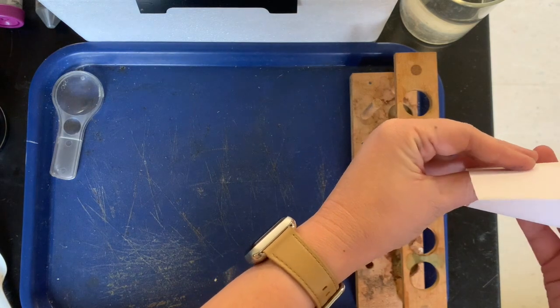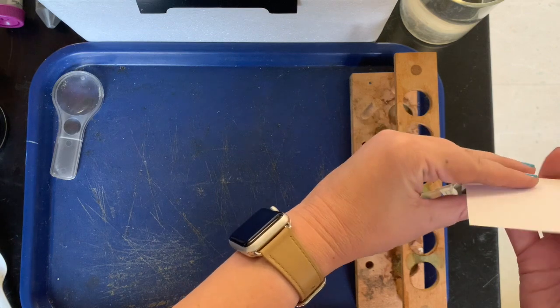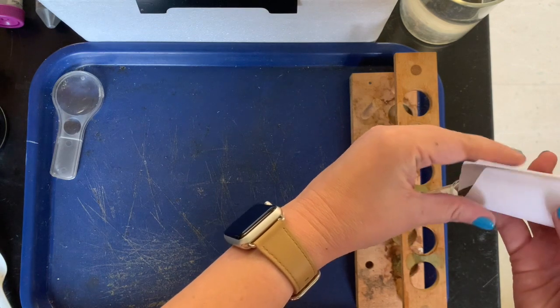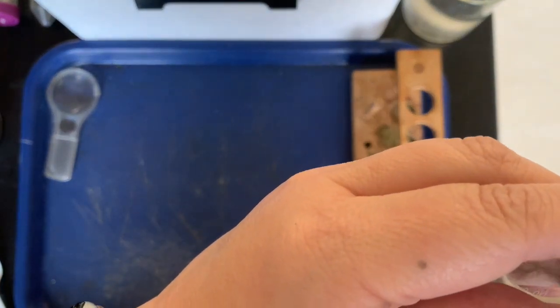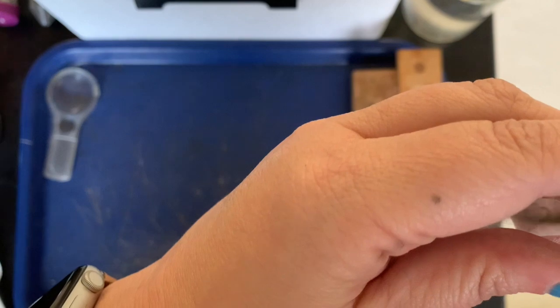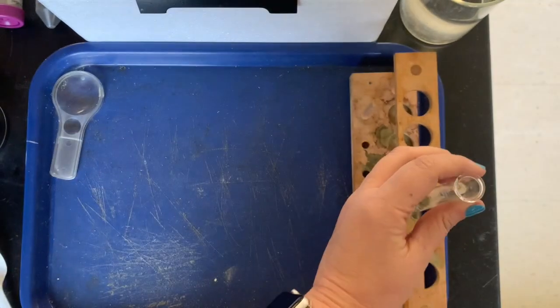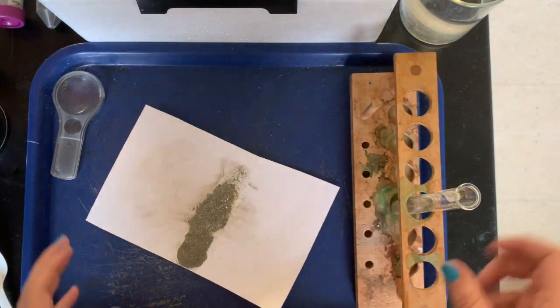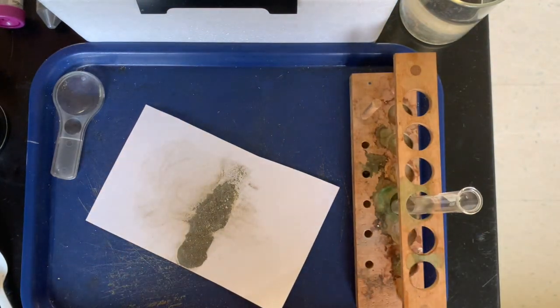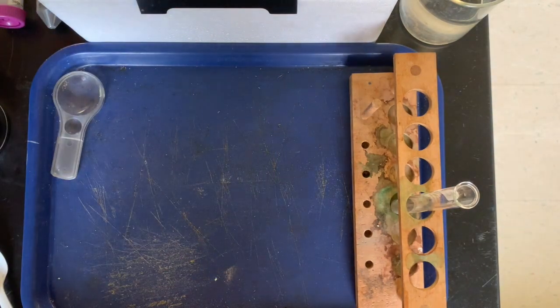We want to fill up the test tube about a fourth of the way. Now I'm feeling nervous when I'm gonna mess up. Okay, I think I'm making it pretty well. I'm just gonna pick it up here. Here we go. Tell me when that's good. Okay, so we've got our mixture in the test tube and we're just gonna set the rest aside. We can maybe do it again later.